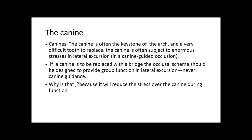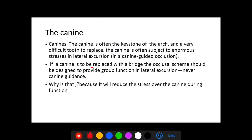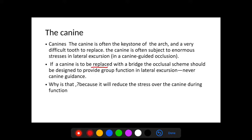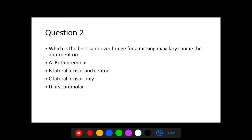The canine is often the keystone of the arch and is difficult to replace. It is subjected to high stress during lateral excursions and functional movements. If replacing a canine with a bridge, use a group function occlusal scheme during lateral excursion — do not use canine guidance — as group function reduces stress over the canine during function.